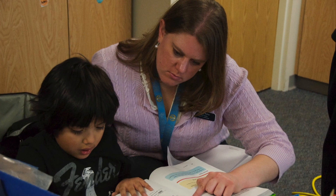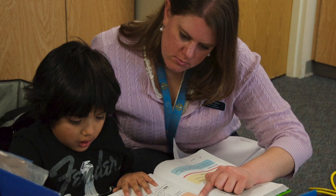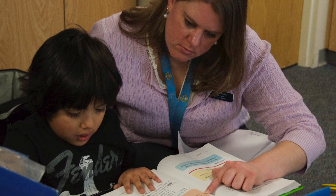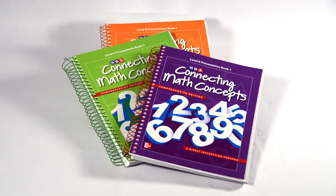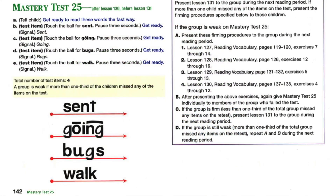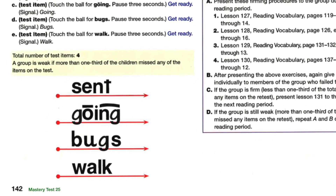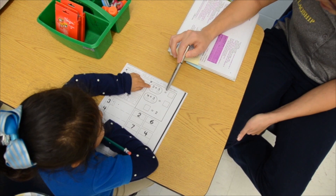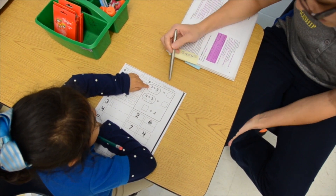If a student fails to pass a mastery test or cumulative test, the student is re-taught the material and re-tested until the student passes. In several of the DI programs, such as Connecting Math Concepts and the Language Track of the Reading Mastery program, mastery tests are divided into different parts with specific passing criteria for each part. If a student earns less than the passing score for any part, the student must receive specific instructional remedies and be re-tested for that part.